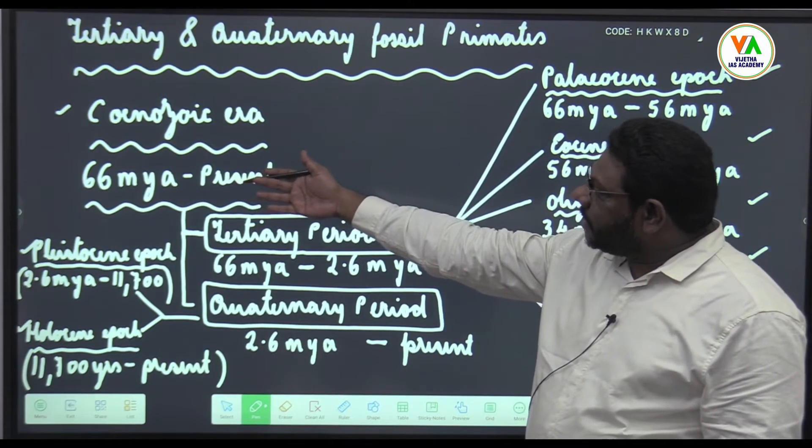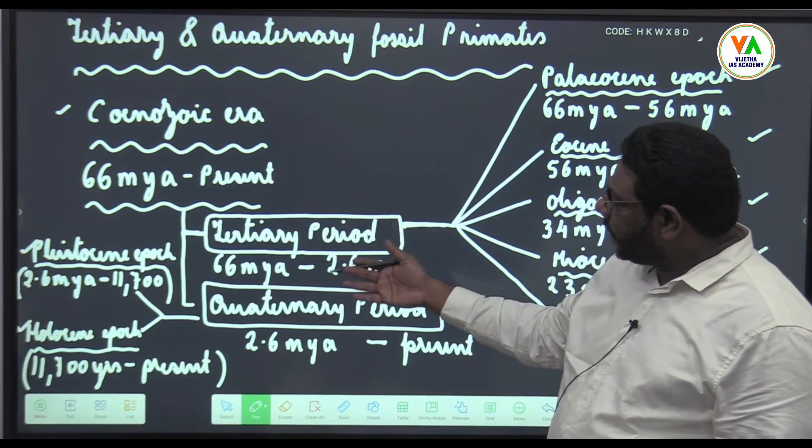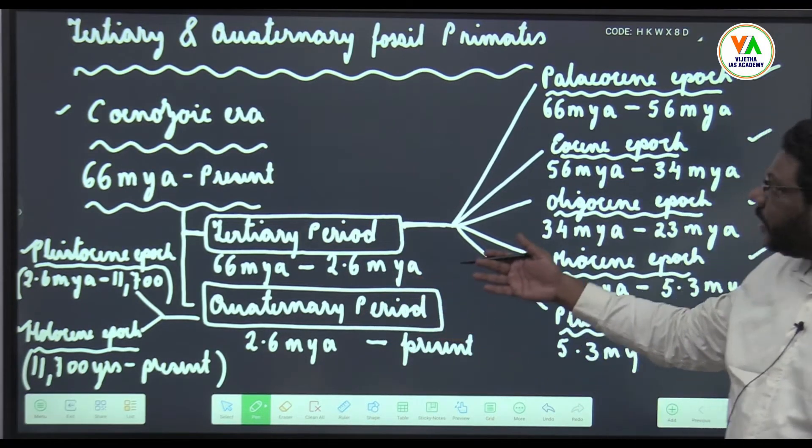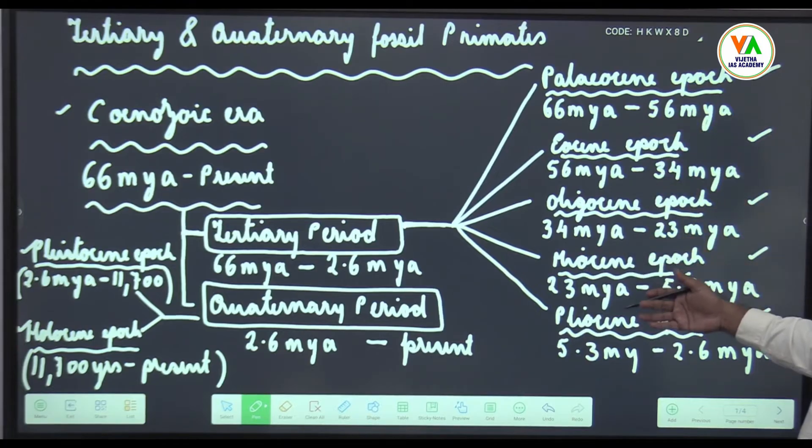You have 66 million years to present, you have tertiary period and quaternary period. Tertiary period: Paleocene, Eocene, Oligocene, Miocene and Pliocene.